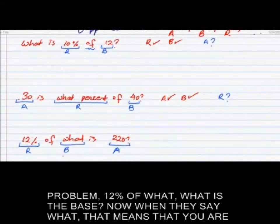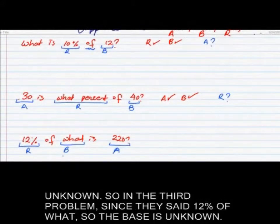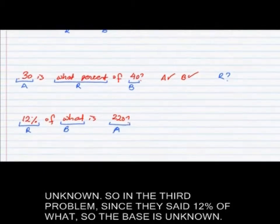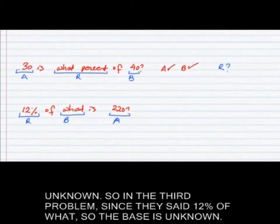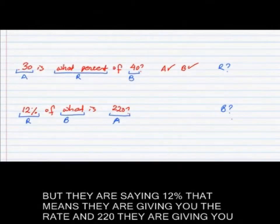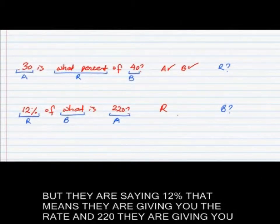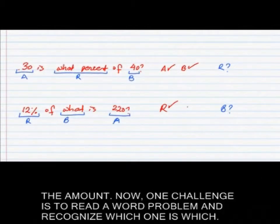When they say 'what', that means it's your unknown. So in the third problem, since they said '12% of what?', the base is unknown. But they are saying 12%, which means they are giving you the rate, and 220 is the amount.